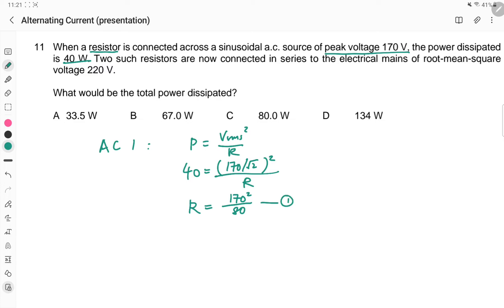Now we connect two of such resistors in series, so the effective resistance will be 2R. For a new AC source, the V_RMS is 220 volts. So for AC 2, I have